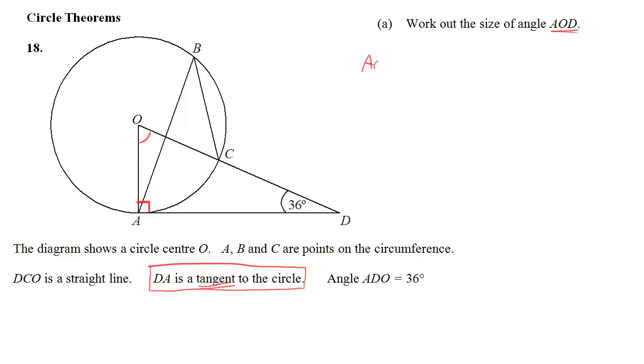And so if I just consider that triangle there, I know that angle AOD plus 90 degrees plus the 36 degrees must equal 180 degrees. And obviously the reason for that is that angles in a triangle sum to 180 degrees. Now if the question had asked me to give reasons, I'd have to write that out in full. The bit in brackets is just as a guide. So simply solve this equation.